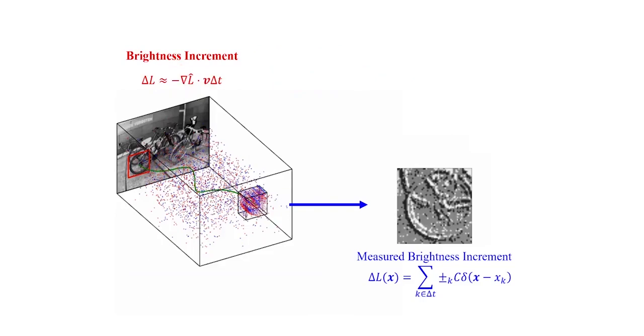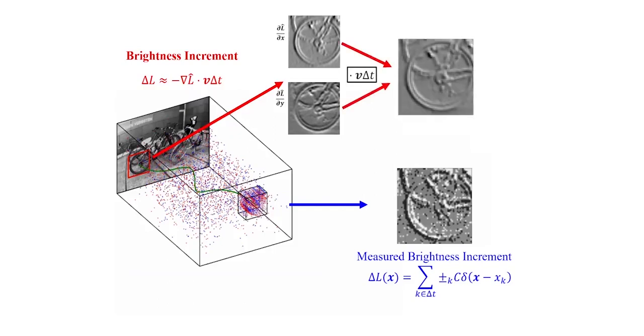This means that, considering the initial frame, we can compute its gradients and multiply it with a suitable optic flow to derive a prediction of the brightness increment which we can register onto the incoming events.